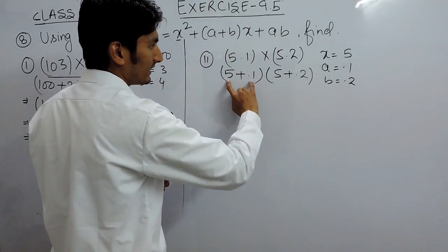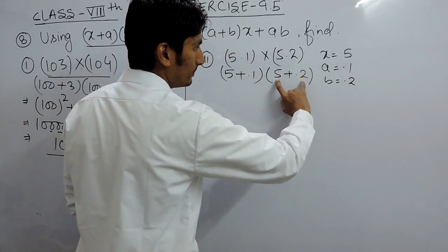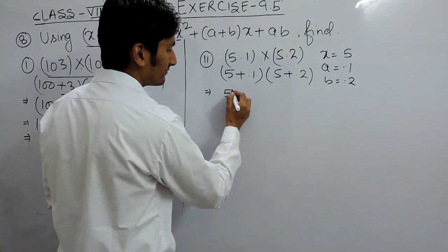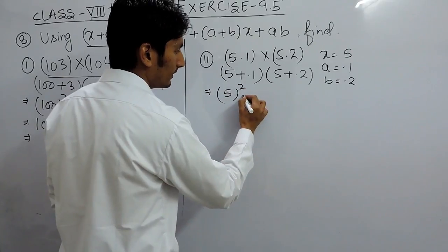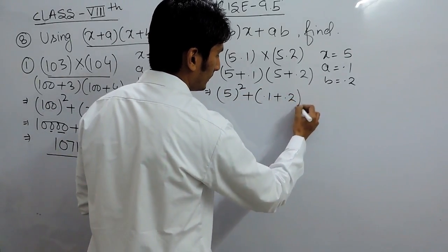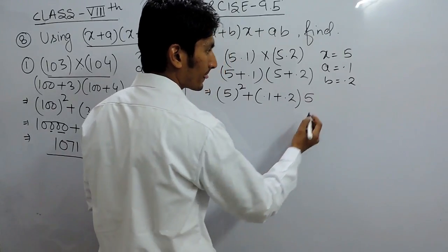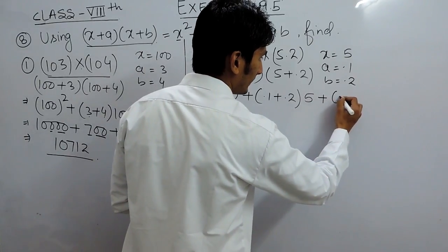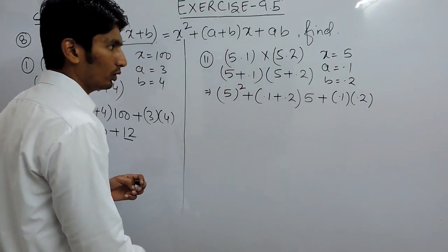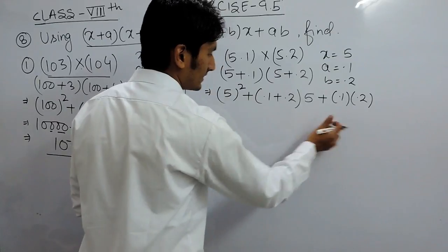This is (x+a) into (x+b) and we know that this is equals to x squared plus (a+b) into x plus a into b. So, this way you can be expanded as this.